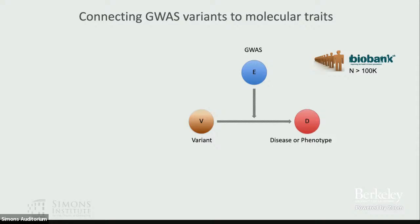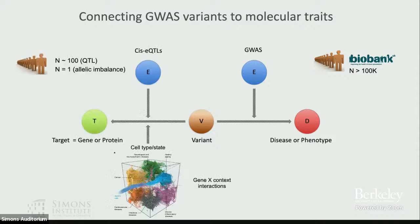On the right-hand side, variant-to-phenotype is what genomic association studies like UK Biobank do — that requires hundreds of thousands of samples. What I want to focus on is linking variants to molecular readouts like gene expression changes. The positive is we can do this in much smaller cohorts of hundreds of people because molecular effects on gene expression are much stronger.